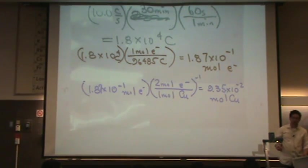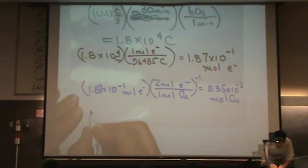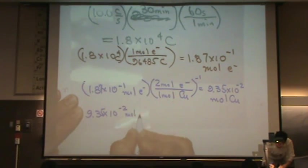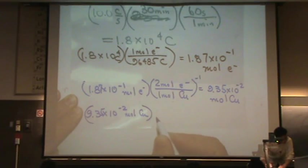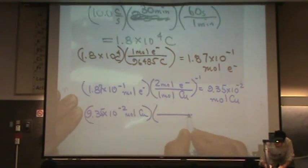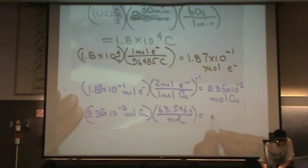That's the moles of copper. I want to change that to grams of copper, and you'll see what we get. 9.35 times ten to the minus two moles of copper. And using the molar mass from the periodic table, 63.546 grams per mole. Just look that up on the periodic table. That turns out to be 5.94 grams of copper.